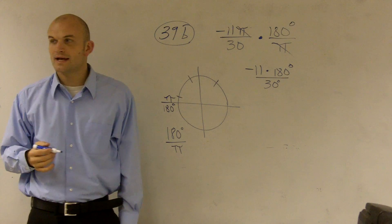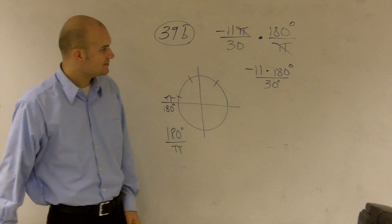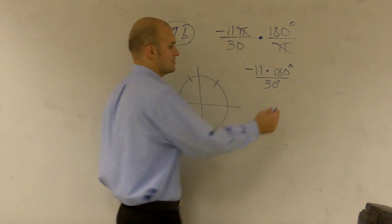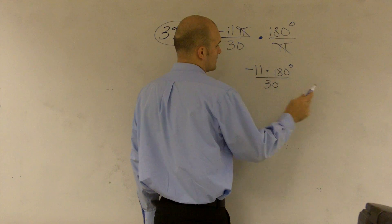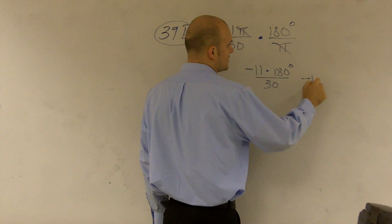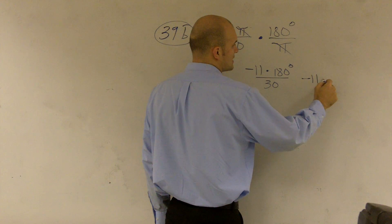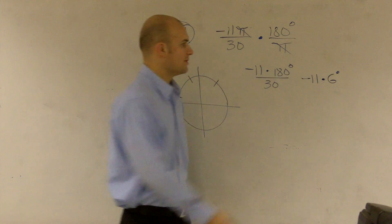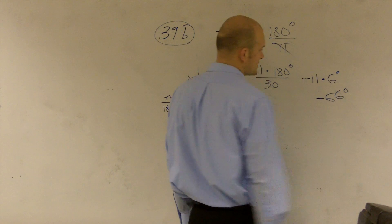And what I would simply do is I'd look at this and say, well, 180 divided by 30 is 6. So I'd have negative 11 times 6 degrees, and therefore you multiply them and you get negative 66 degrees.